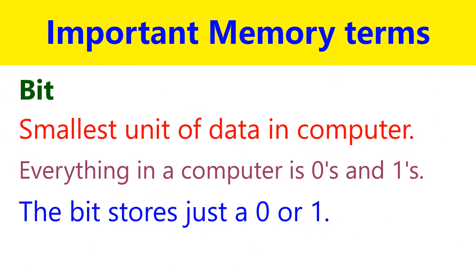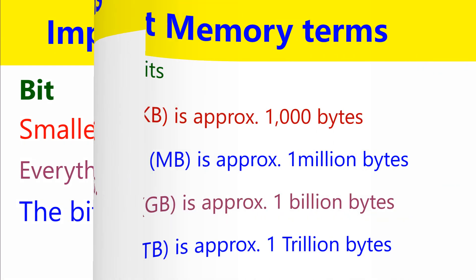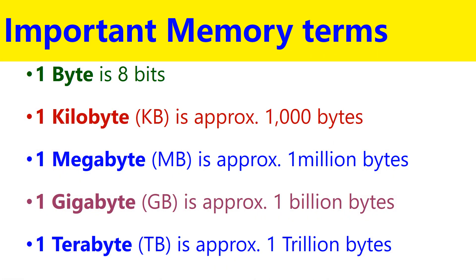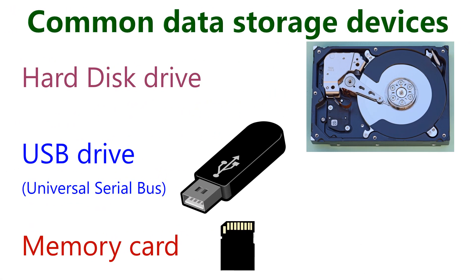A bit is the smallest unit of data in a computer. Everything in a computer is 0 and 1. A bit stores just a 0 or 1. 1 byte equals 8 bits. 1 kilobyte equals 1000 bytes. 1 megabyte equals 1 million bytes. 1 gigabyte equals 1 billion bytes. 1 terabyte equals 1 trillion bytes.